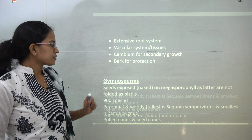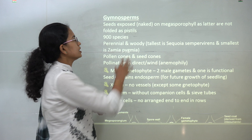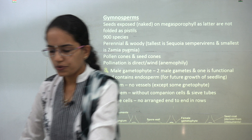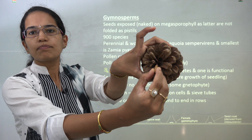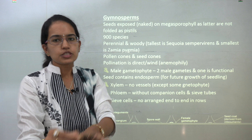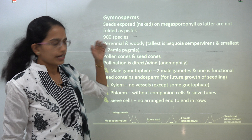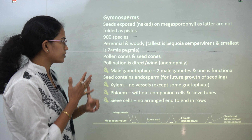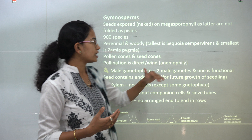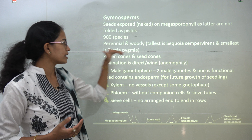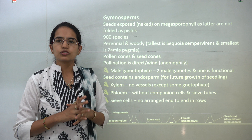Moving on to gymnosperms: the seeds are exposed. On the cone you have the seeds which lie exposed — they are not part of a fruit. They are lying exposed and therefore naked on the megasporophyll and are not folded within the pistils. Most gymnosperms are perennial and woody in nature. The tallest is Sequoia sempervirens and the smallest is Zamia pygmaea. These are sometimes direct questions, so you have to memorize those.